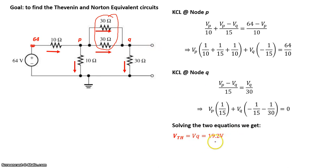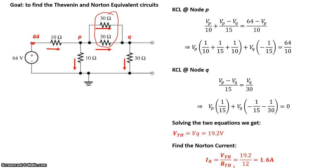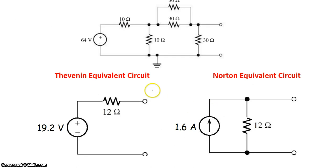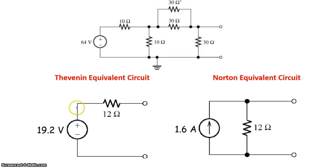VQ comes up to 19.2, and that happens to be the Thevenin voltage. Now finding the Norton current, Norton current is Thevenin voltage divided by the Thevenin resistance. So we get 19.2 divided by 12 equals 1.6 amps. So here it is for this circuit: here's our Thevenin voltage, 19.2 volts in series with 12 ohms, or 1.6 amps in parallel to 12 ohms.